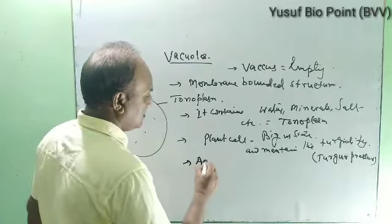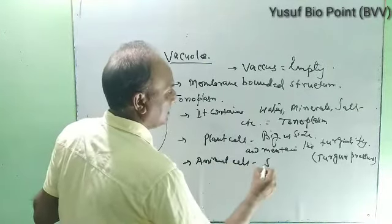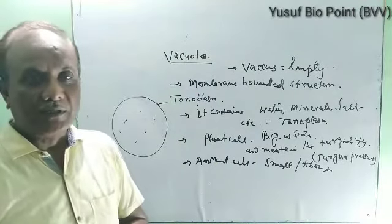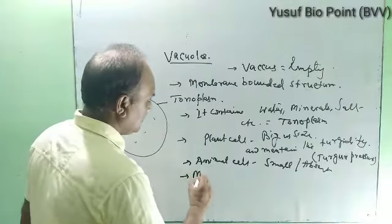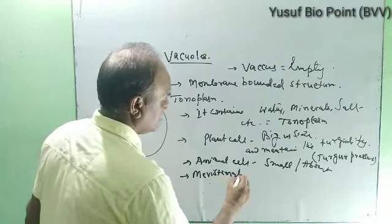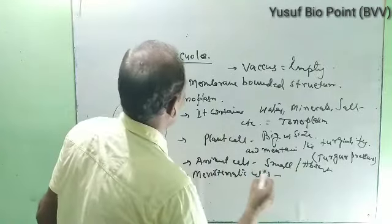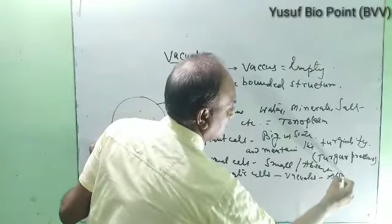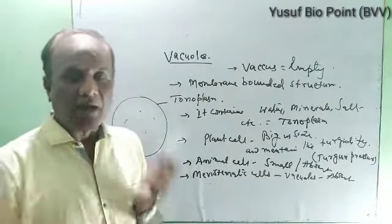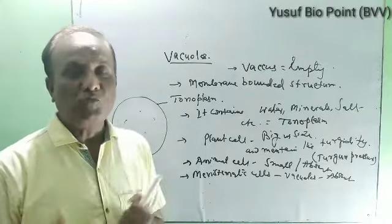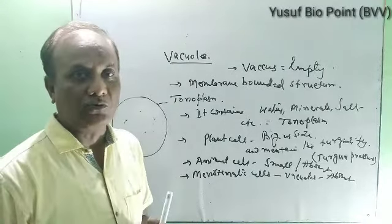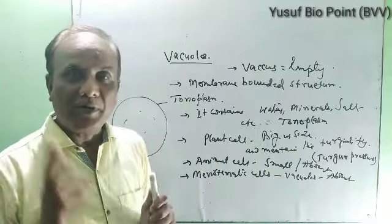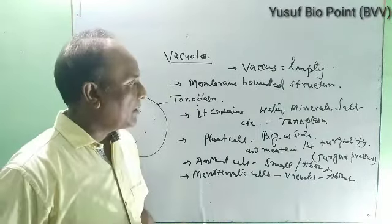In animal cells, vacuoles are either small or sometimes absent. In meristematic cells — which have a high cell division capacity and very dense cytoplasm — vacuoles are absent because there is no chance of vacuole formation. In other plant cells, vacuoles are found and are usually big in size, but in meristematic cells they are absent.